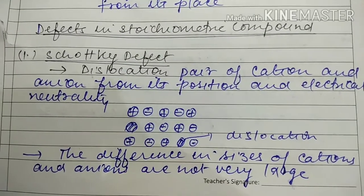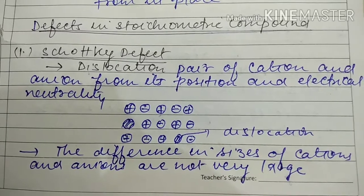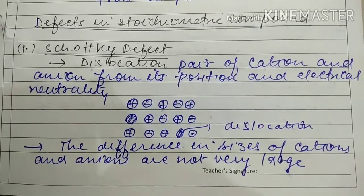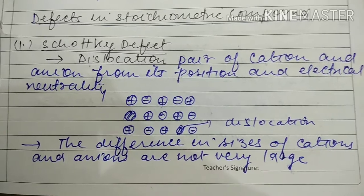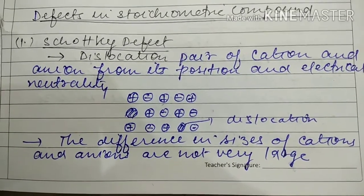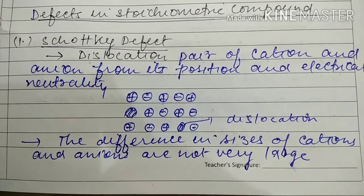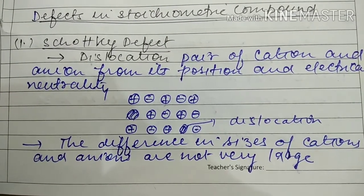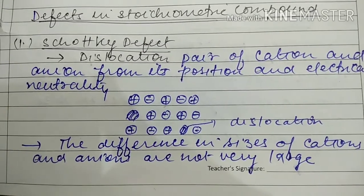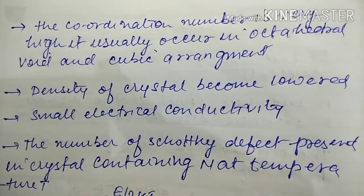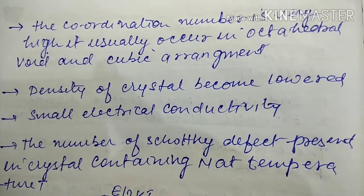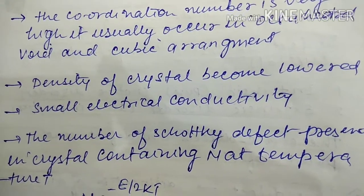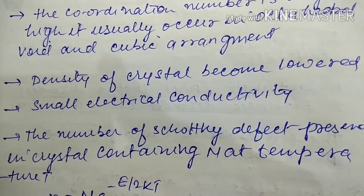The first type of defect in stoichiometric compounds is the Schottky defect. It involves dislocation of a pair of cation and anion from their positions while maintaining electrical neutrality. The difference in size of cation and anion is not very large. Coordination number is very high and it usually occurs in octahedral void and cubic arrangements like BCC.